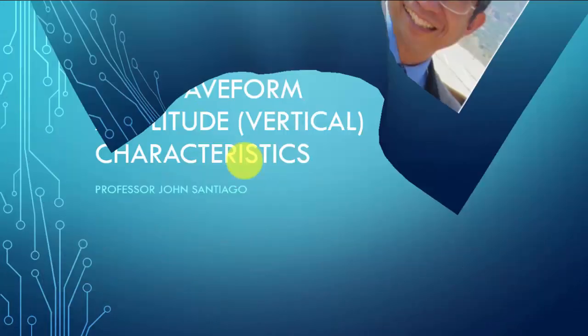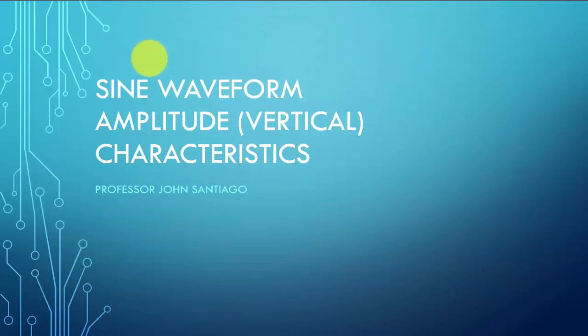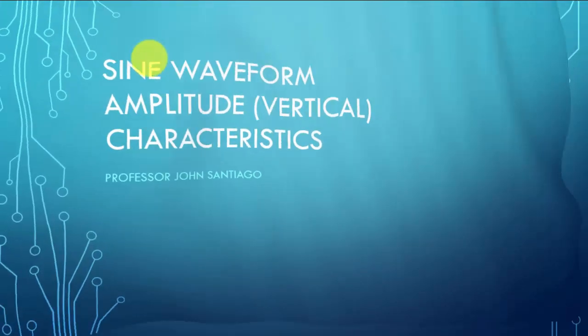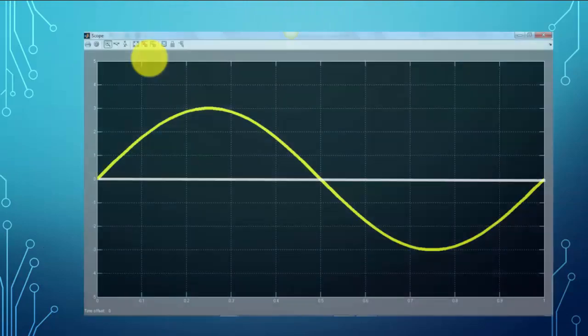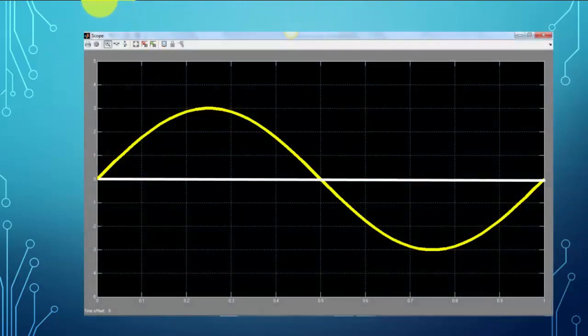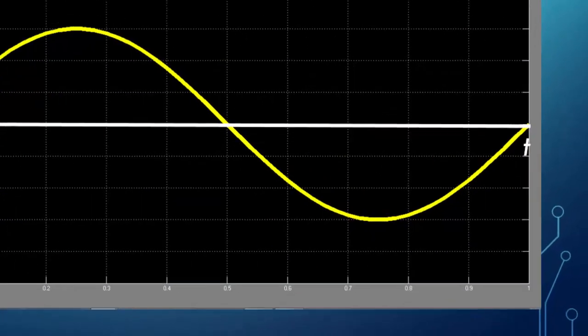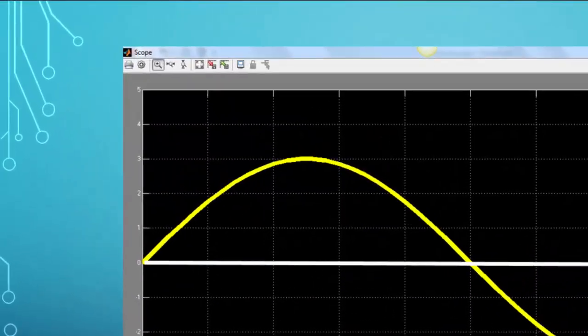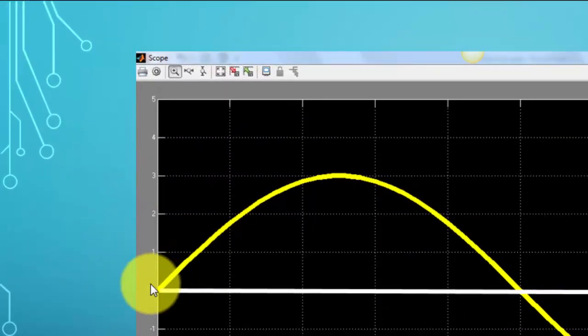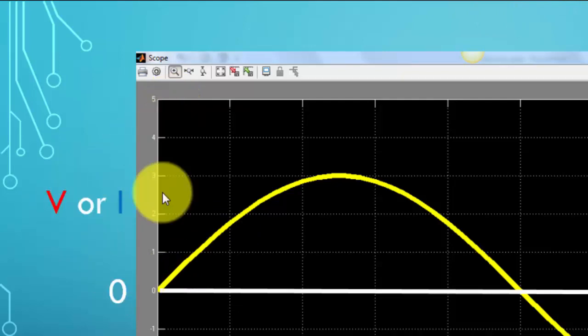For sine wave with amplitude vertical characteristics, here's a typical sine wave. Along the horizontal axis it's labeled as time, and we have the zero point shown here. We have the vertical axis, either a voltage or a current.